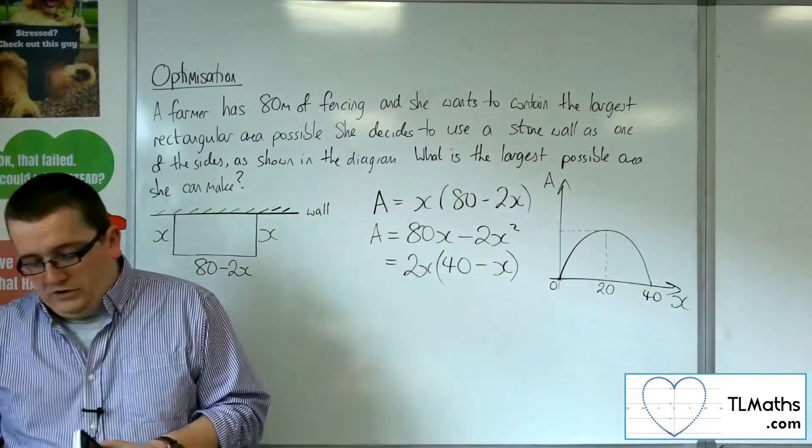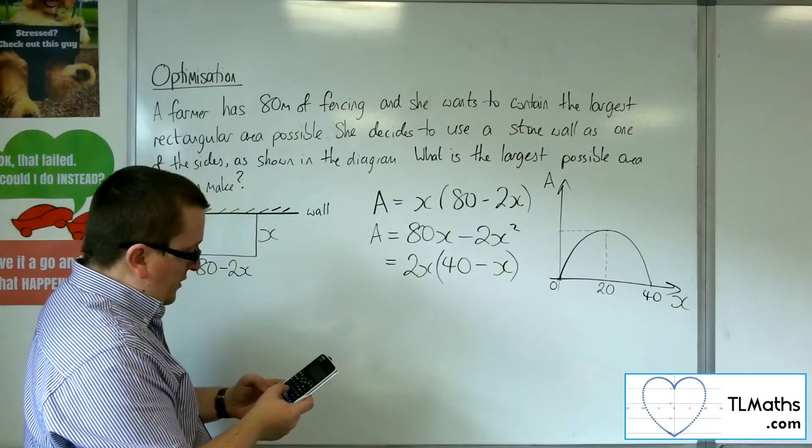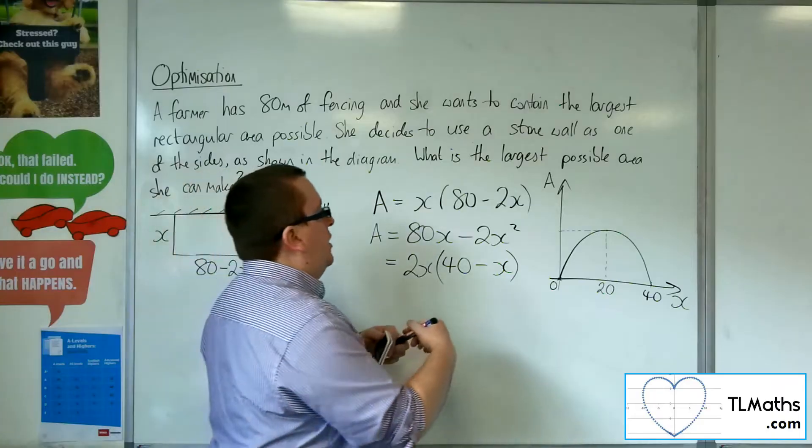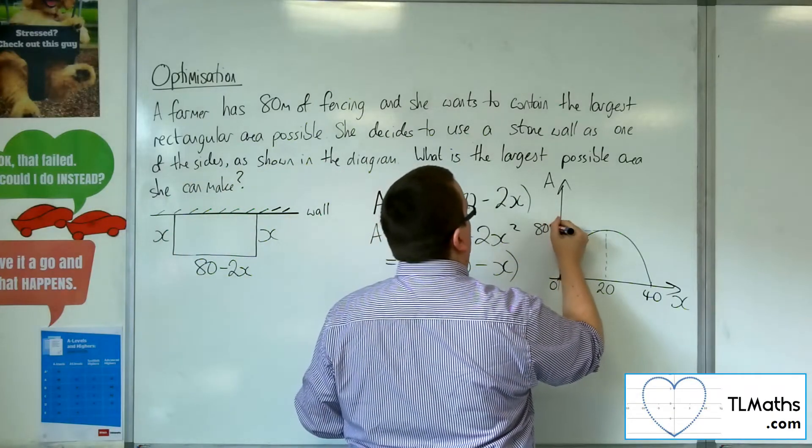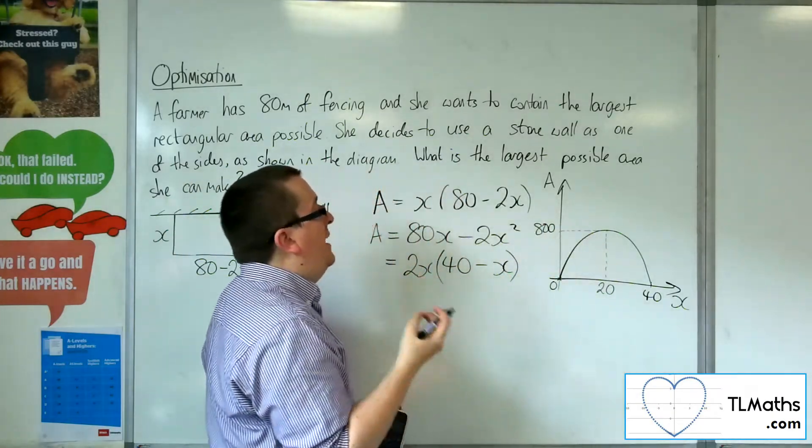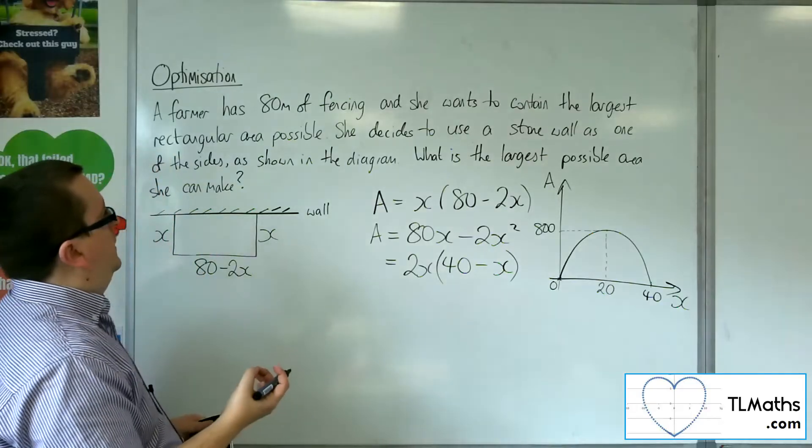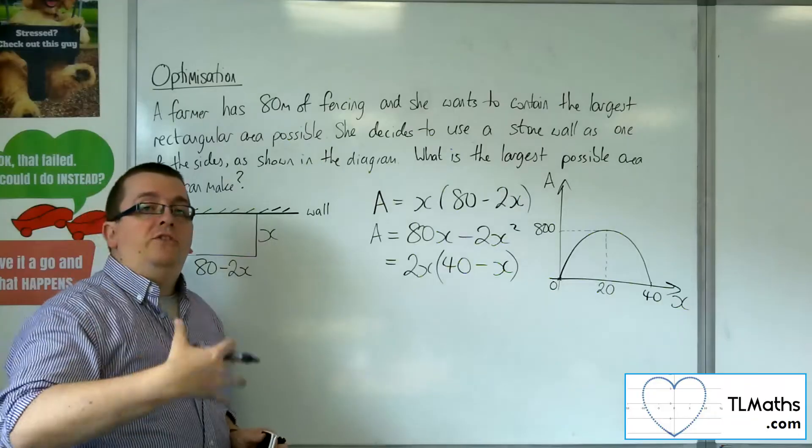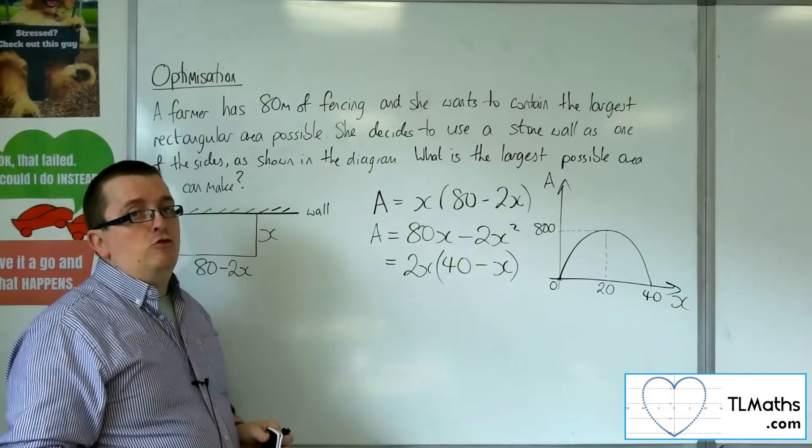If I get 20 and I times by 80, take away 2 lots of 20, then I get 800. So the actual maximum area is going to be 800 square meters. Now what we could do is use differentiation to get to that result as well.